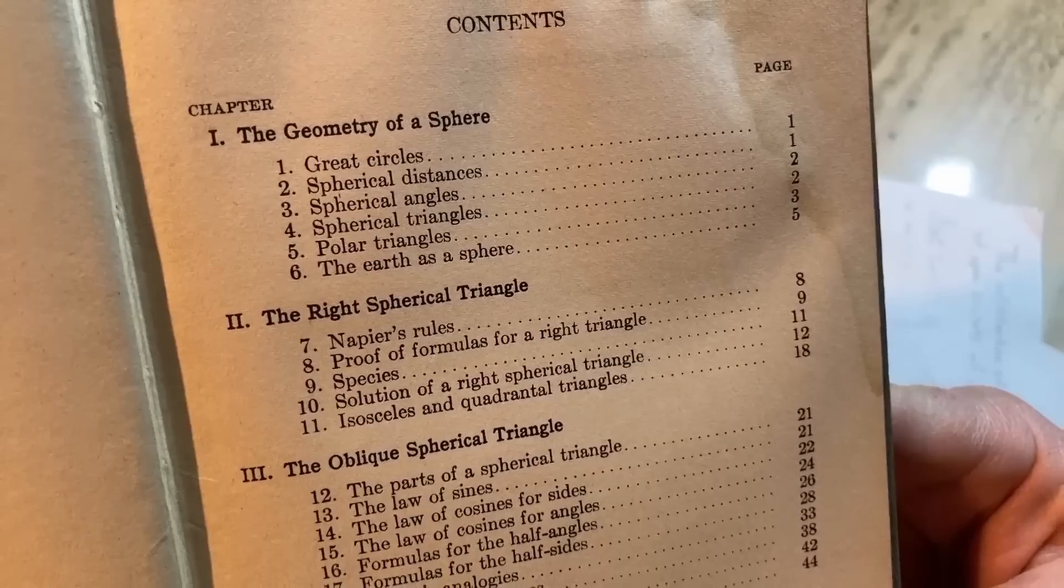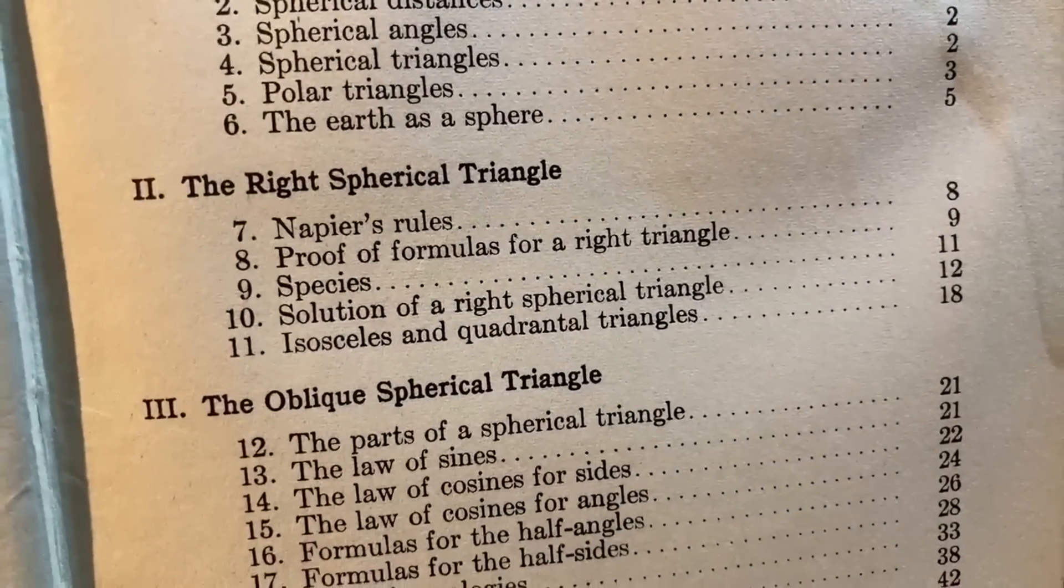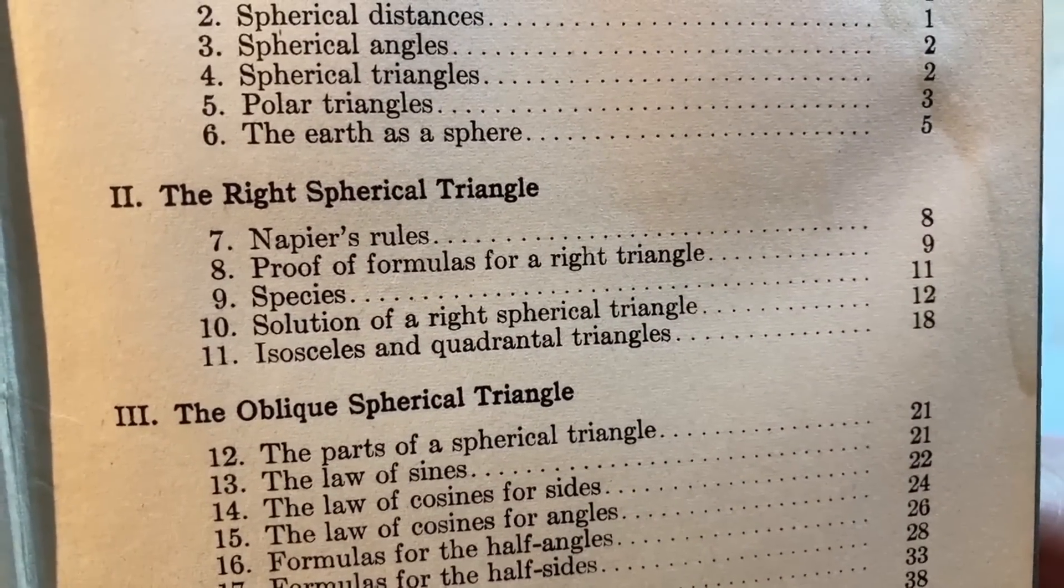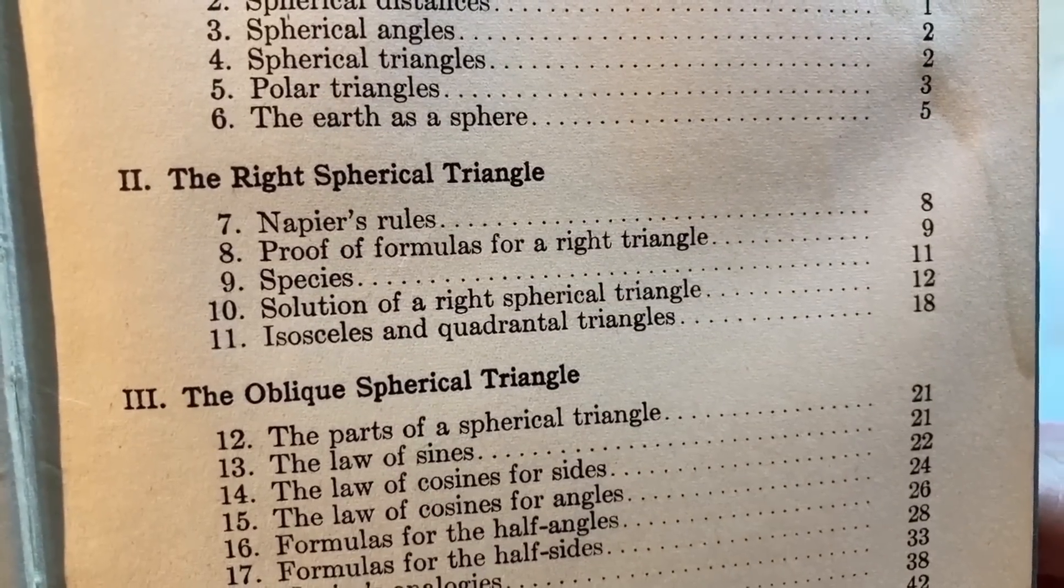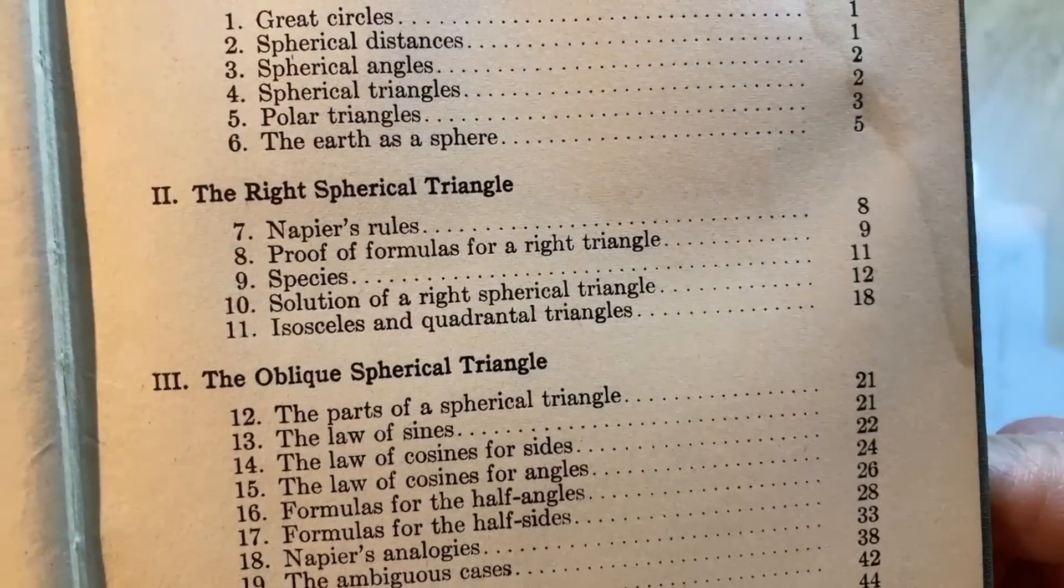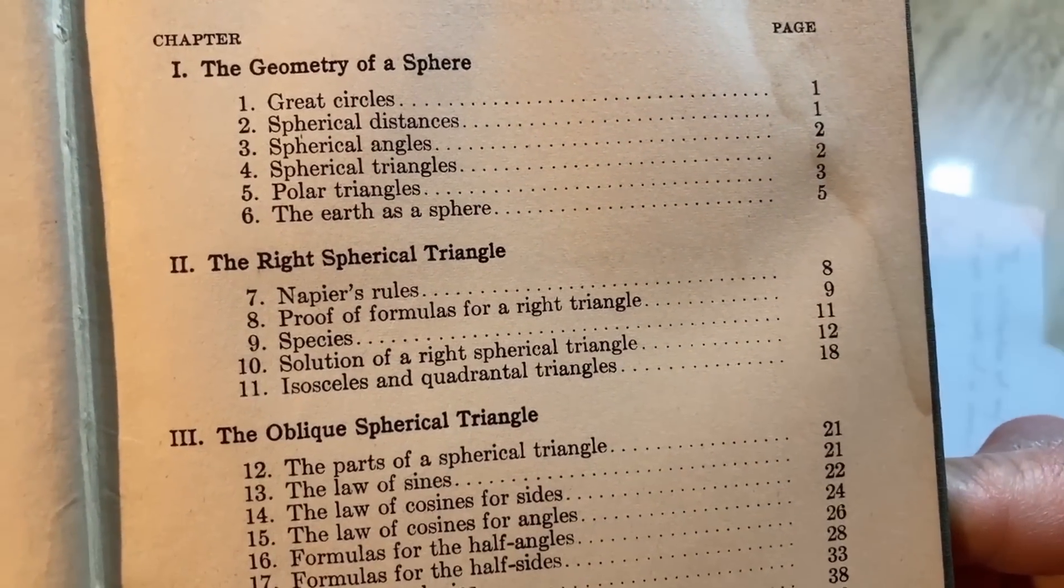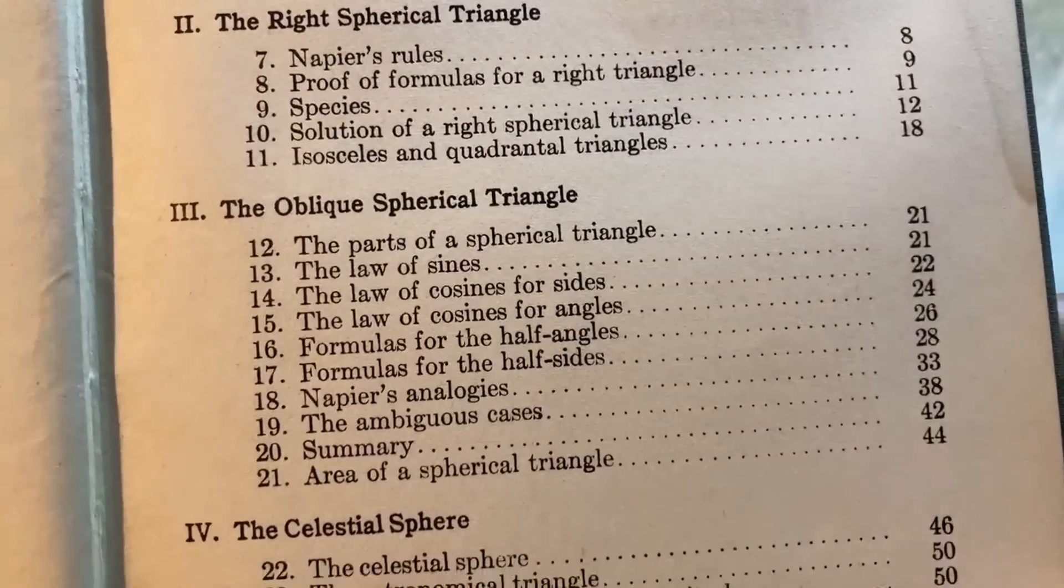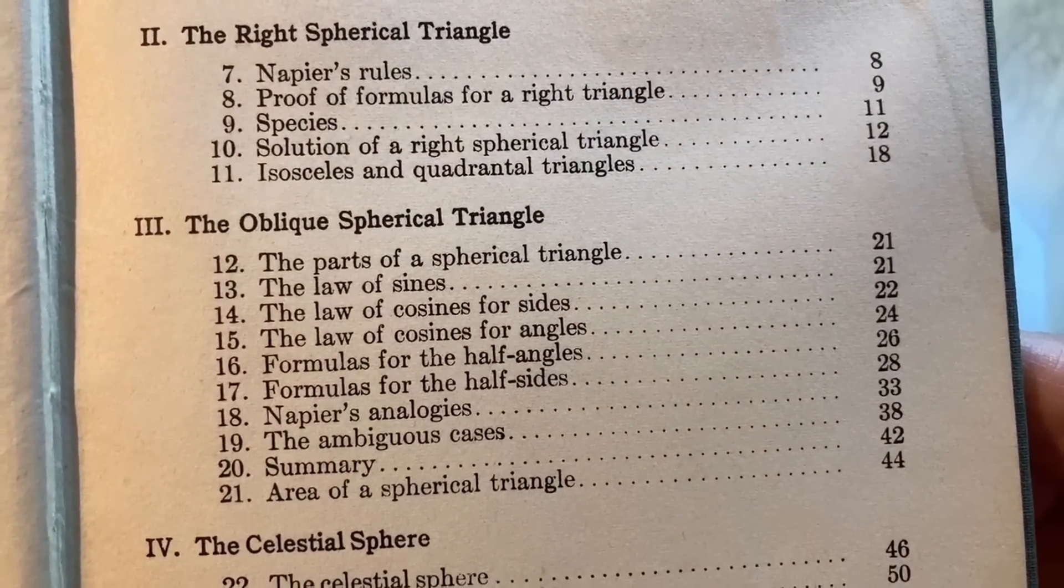Starts with great circles, talks about spherical distances, spherical angles, spherical triangles, polar triangles, the earth is a sphere. All kinds of stuff here. Then he goes to right spherical triangle, Napier's rule, proof of formulas for a right triangle, species, solution of a right spherical triangle, isosceles and quadrantal triangles. This is so cool. This is not something that is studied anymore. It's the forgotten math.